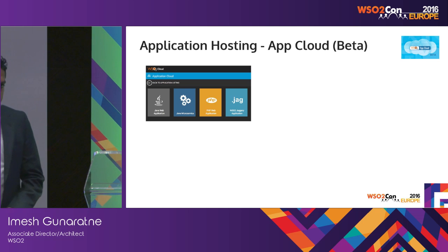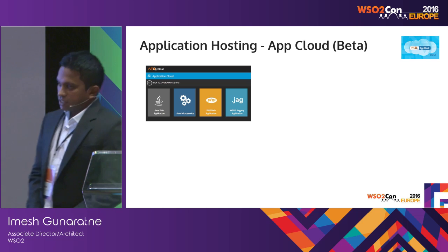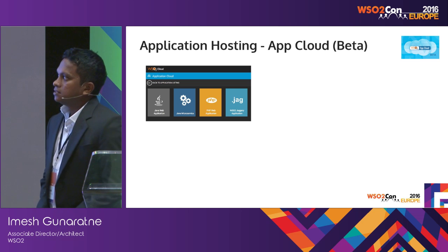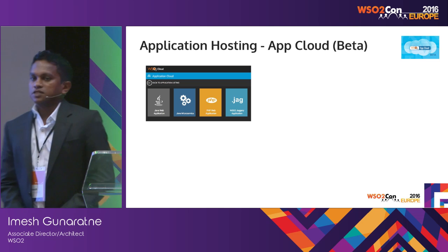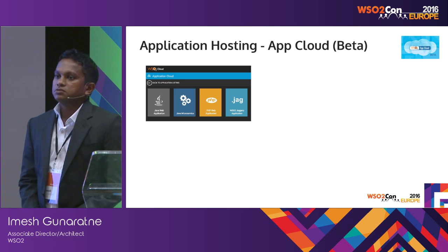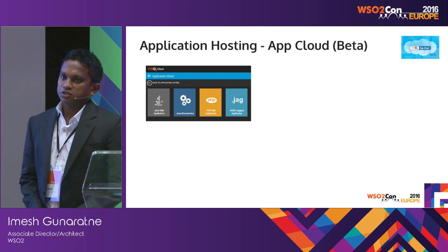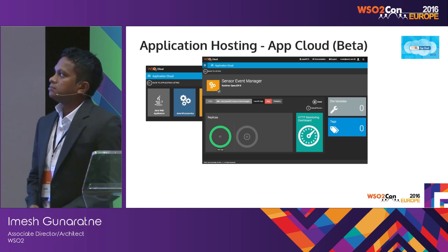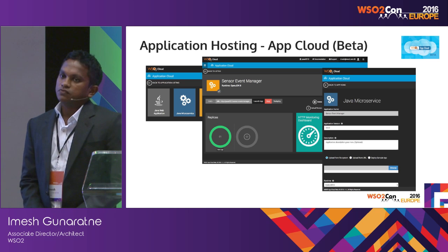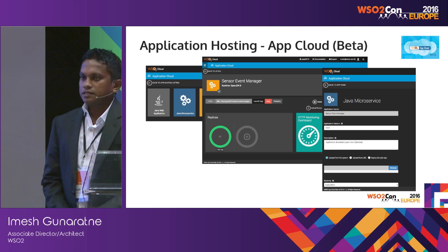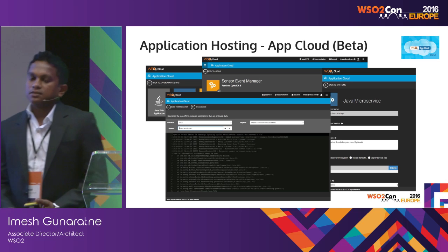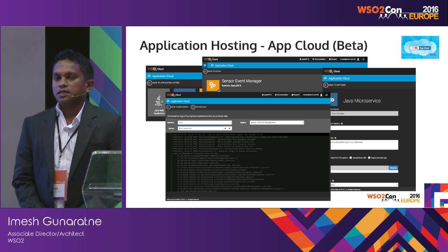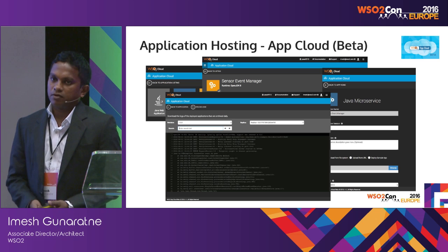In the public cloud, we provide application hosting. It supports Java web applications, MSF4J-based microservices, PHP, and Jaggery. Jaggery is a server-side JavaScript engine which WSO2 implements. It provides an attractive UI for managing deployment and monitoring, and also supports versioning — so if you want to manage multiple versions and do product updates, that's supported. It also provides log aggregation, and all of these features run on top of Kubernetes, on a publicly running Kubernetes cluster hosted on AWS.